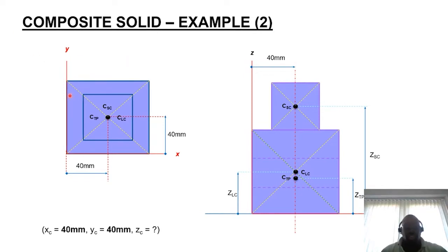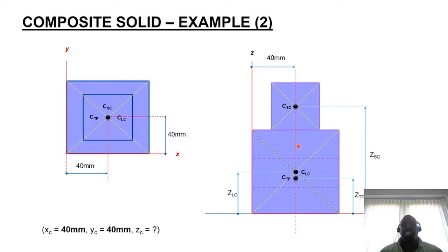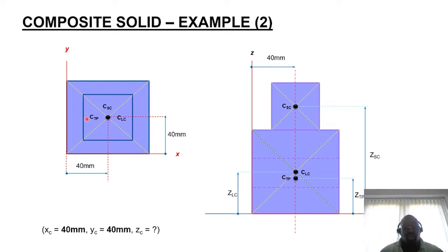Using orthographic projection, you can identify the likely centroid positions for the individual forms. Looking at the plan view, the object is symmetrical, so the central position of all forms rests at the same bearing. This makes it easy to define the global coordinates in x and y — both are 40mm. The challenge now is to identify the global coordinate for z.